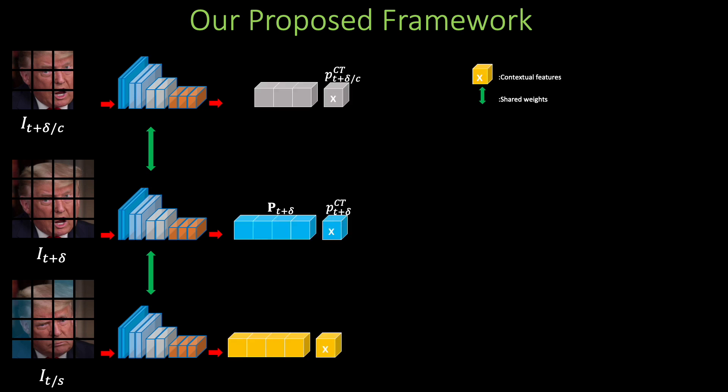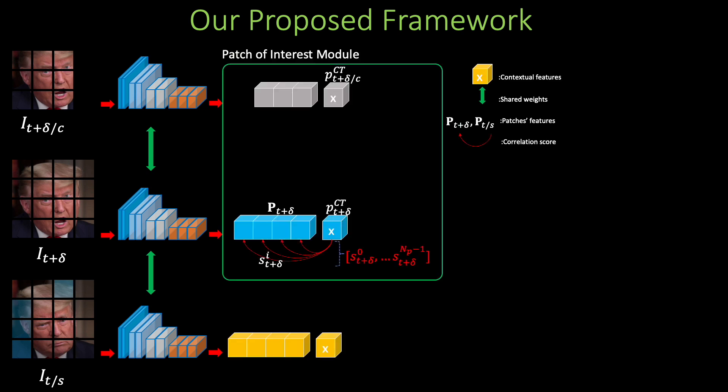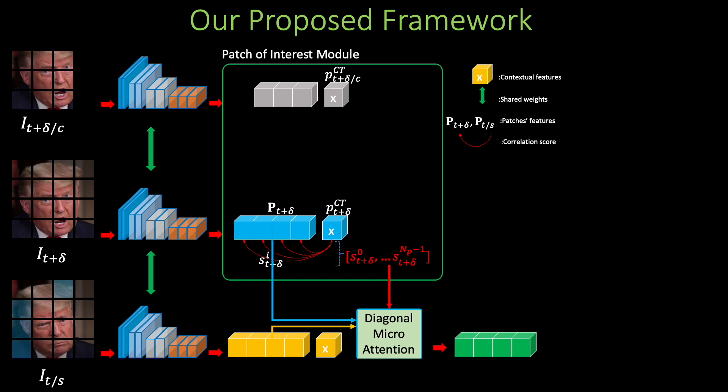These inputs are fed into the vision transformer encoder simultaneously to extract the patch features and contextual features. These features go through patch of interest and diagonal micro-attention, respectively.